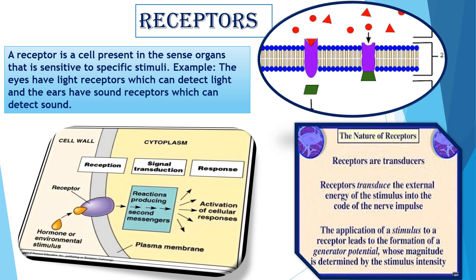Receptors are involved in the transformation of different types of energy — for example, light, sound, heat, pain, etc. — into nerve impulse, which is electrical energy. Thus, receptors are called biological transducers or energy-transforming devices.